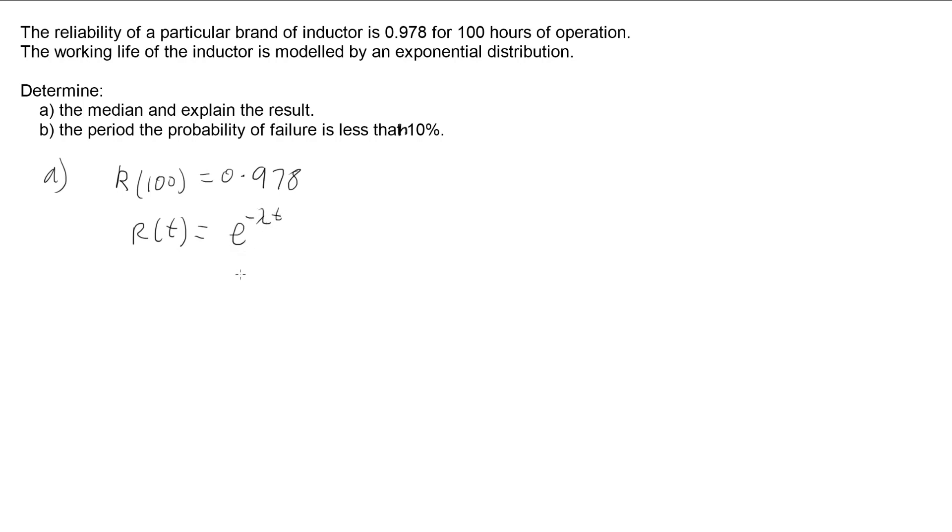So if we put these two pieces of information together, we have that 0.978 is equal to e to the negative lambda times 100. And so what we need to do is work out lambda.